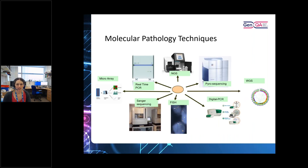We are very lucky in our genomic laboratory hubs to have many different technologies available. This is just an example of some of the molecular pathology techniques and machines we have — anything from quite high-throughput next-generation sequencing machines to more specific targeted machines looking at small runs of DNA like pyrosequencing, or things like digital PCR which can be incredibly sensitive with very low limits of detection. We also have techniques for looking at larger structural variations, such as FISH and microarrays.